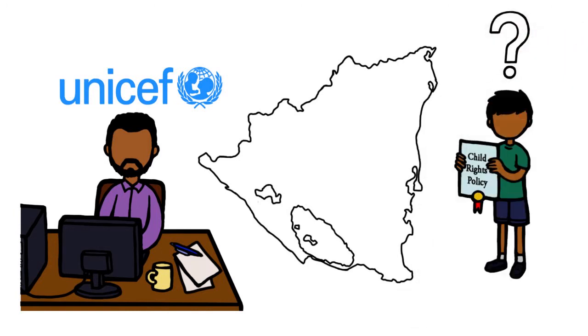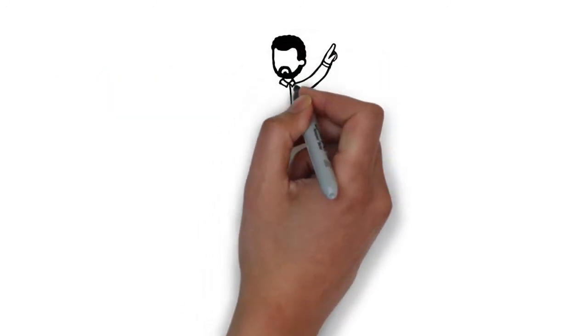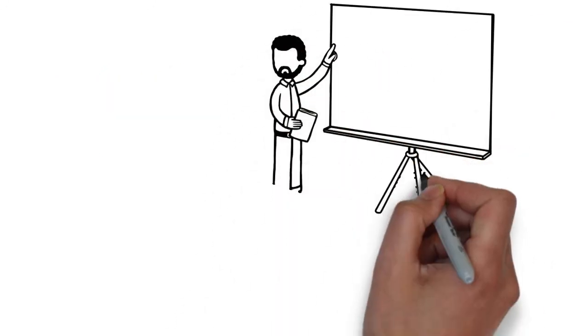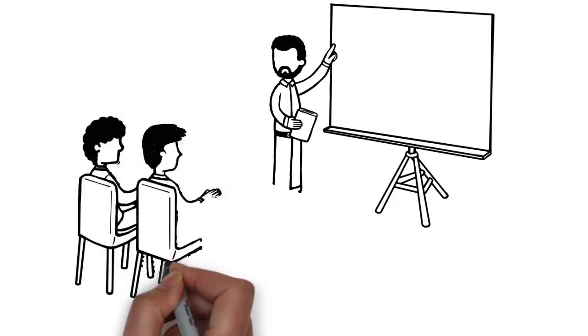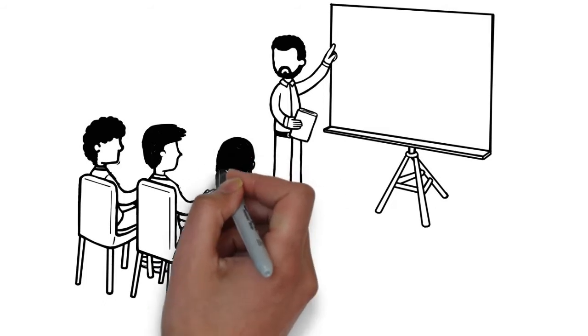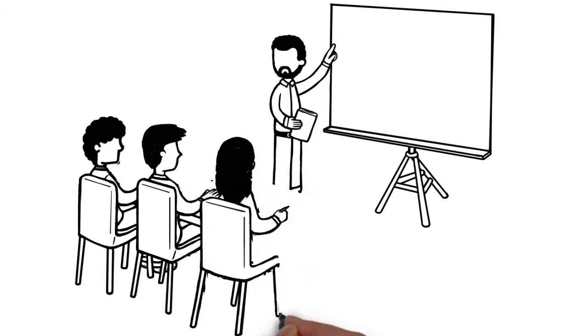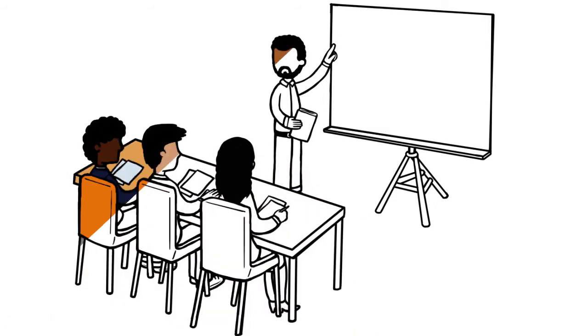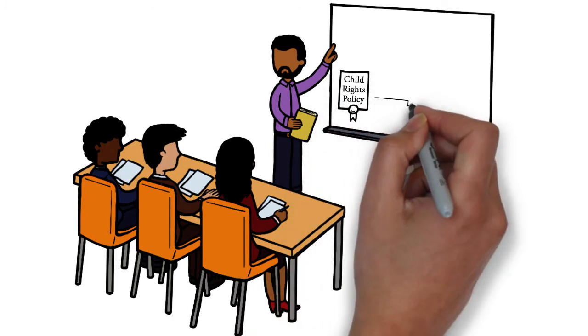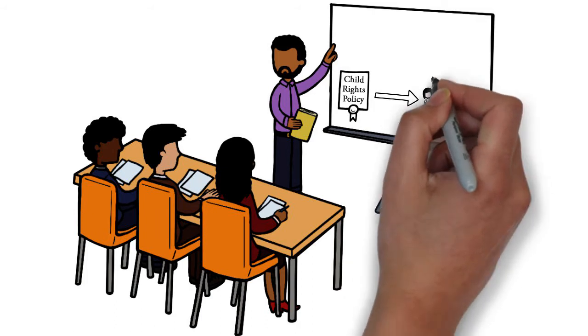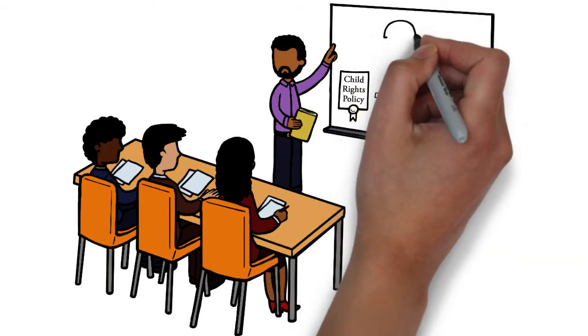As part of planning the evaluation, Carlos is thinking ahead as to how it will be used. He knows it won't be enough to just measure whether there have been improvements in child well-being. He will need to know whether the policy support has contributed to these changes. That way, people will be able to learn from his experience about how to implement similar child rights policies in other settings.